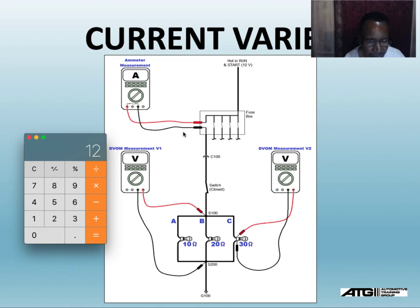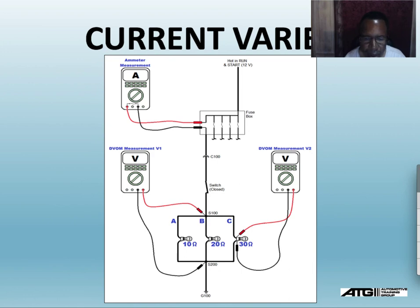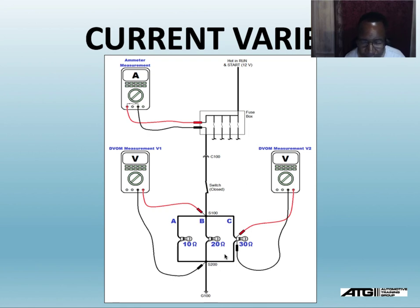An amp meter is hooked up in series with a break in the circuit, as you can see here. A voltmeter is hooked up in parallel on each side of the load to do a voltage drop — there are no breaks in the circuit when doing a voltage drop. When I do a voltage drop, the voltmeter goes across the load with one lead on each side, no breaks, so current can flow and I can read the voltage drop on my meter.